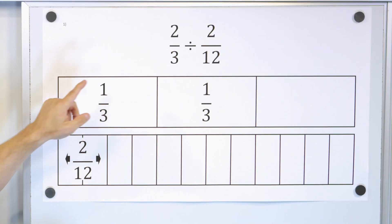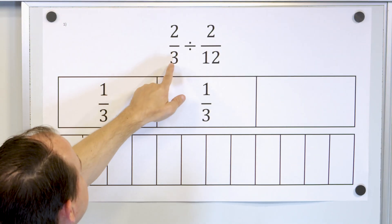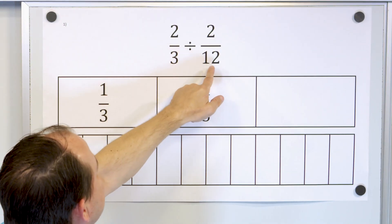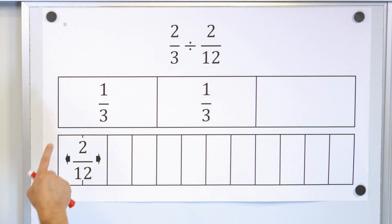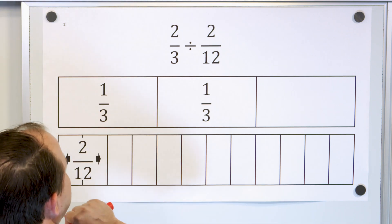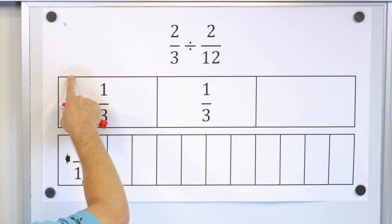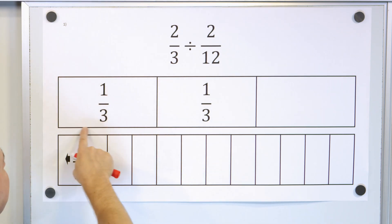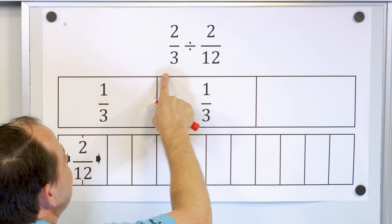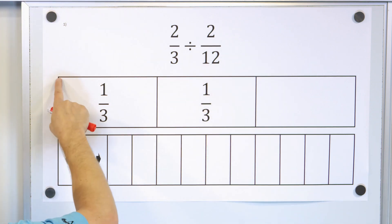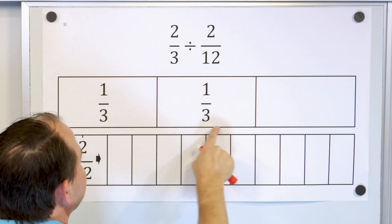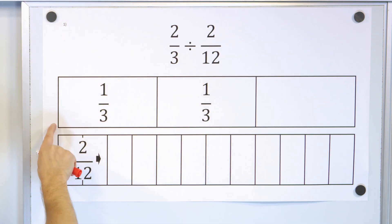So let's take a look at problem one: two-thirds divided by two-twelfths. So what does two-thirds look like anyway? Here we have one-third, and we have another third right here — that makes two-thirds total.